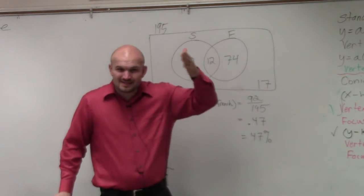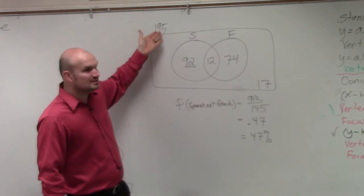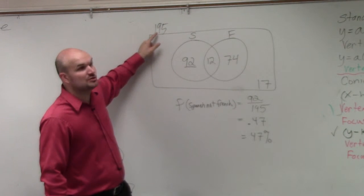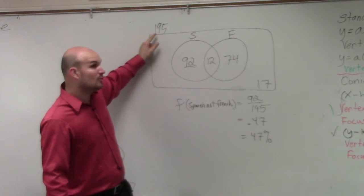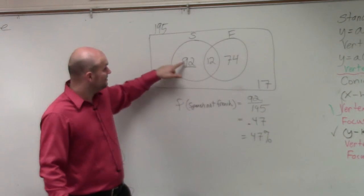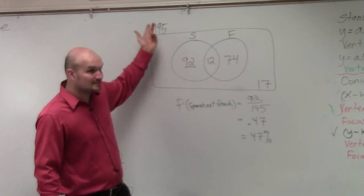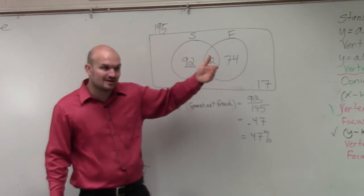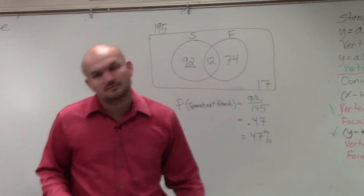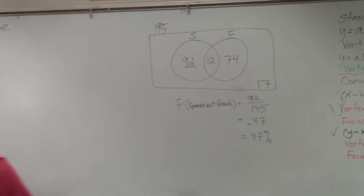And does that even kind of make sense? I mean, think about how many students, right? What's half of 195? Well, that's almost 200, right? What's half of 200? 100. 100 would be 50%. This is at 92, right? So that kind of makes some sense, right? That it should be less than 50%, right? But close to 50%. So the answer makes sense.